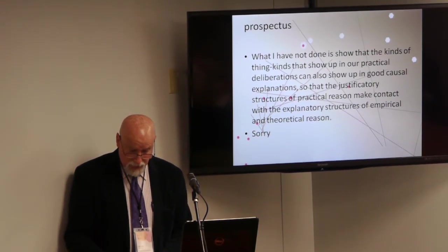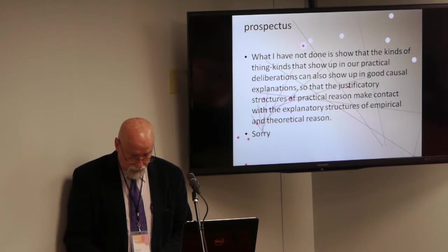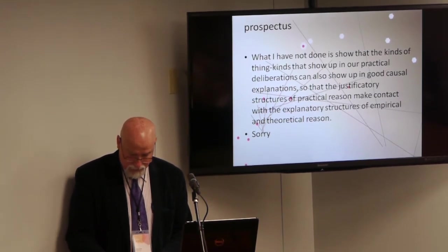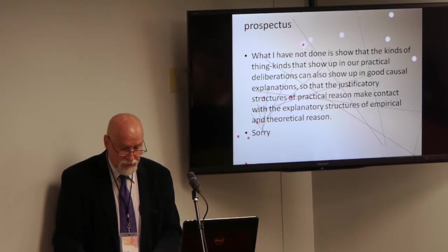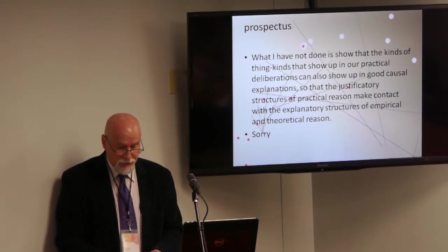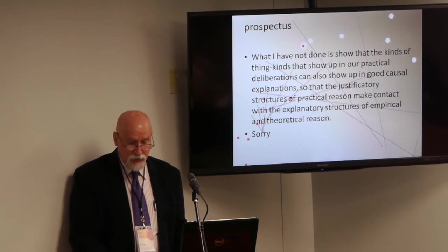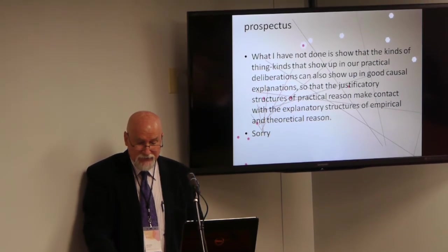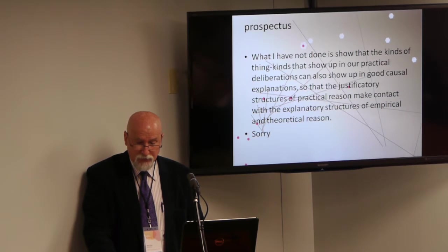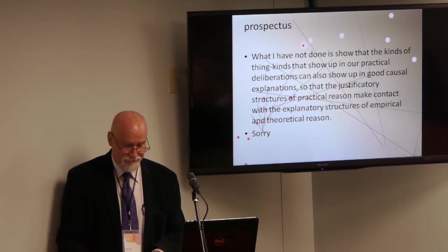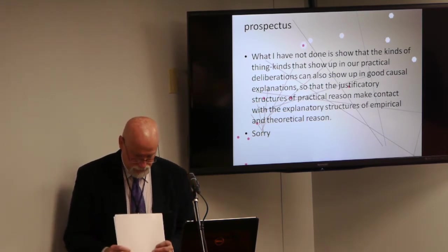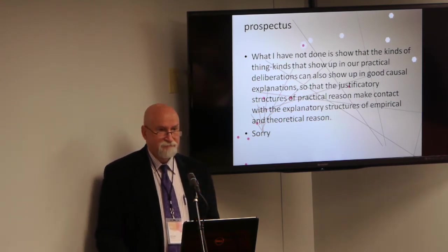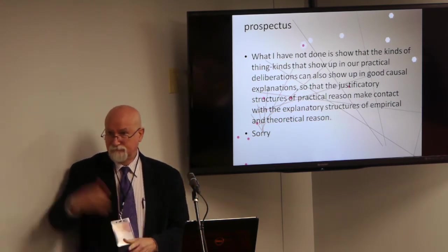So if my argument here is right, then we are at the doorstep of the next problem, I told you I wouldn't get there, showing that the kinds of thing kinds that show up in our practical deliberations can also show up in perfectly good causal explanations, so that the justificatory structure of practical reason makes contact with the explanatory structures of empirical and theoretical reason. That task is obviously for some other day. Thanks.